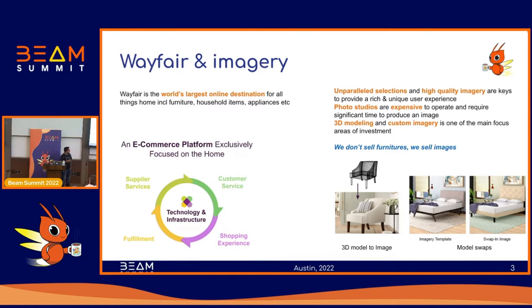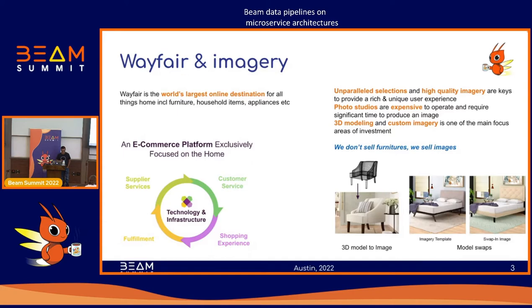What we do is use 3D models and custom imagery. As you see in these images, the first one utilizes 3D models to create an image of an accent chair, and the next one talks about the model swap pipeline where we use an imagery template to create an image of a bed on screen. It's also said that at Wayfair, we don't sell furniture — we sell images, because images are what you see to make a purchase decision.